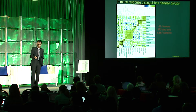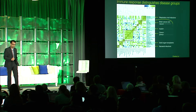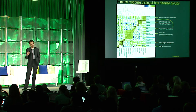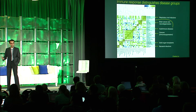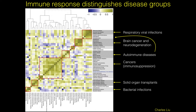He showed me this graph, and the first thing that jumped out was that all of these diseases clustered based on their immune response — the type of immune response. All the respiratory viral infections were in one cluster, and the autoimmune diseases thought to be triggered by viral infections clustered with respiratory viral infections. All the brain cancers and neurodegenerative diseases were in their own cluster — and if you think about it, the brain is an immune-privileged organ with a blood-brain barrier, and that's what's being captured here.